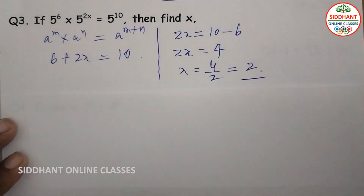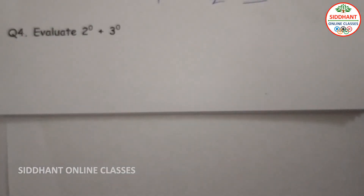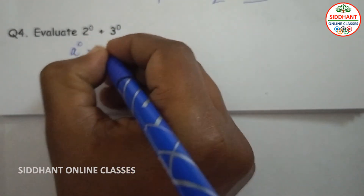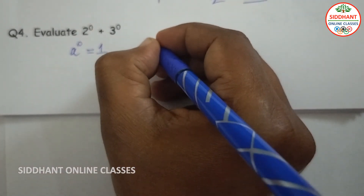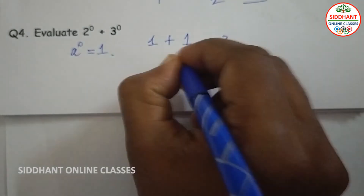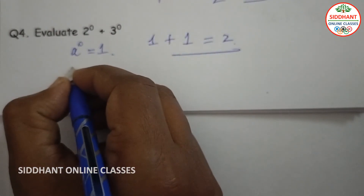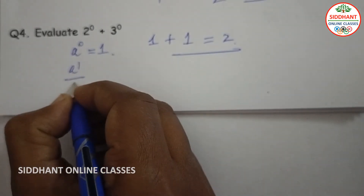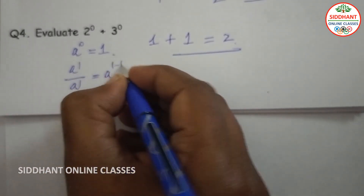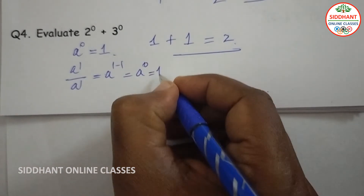Question number 4: evaluate 2 to the power of 0 plus 3 to the power of 0. We know that a to the power of 0 equals 1. So 2 to the power of 0 equals 1, plus 3 to the power of 0 equals 1, giving a total of 2. To justify why a to the power of 0 equals 1: consider a to the power of 1 divided by a to the power of 1. Bases are same, so a to the power of 1 minus 1 equals a to the power of 0, and any number divided by itself is 1.